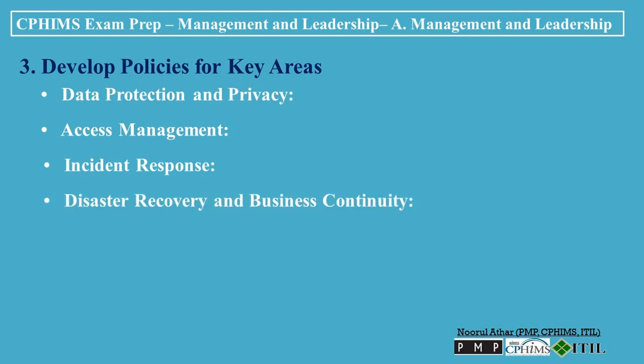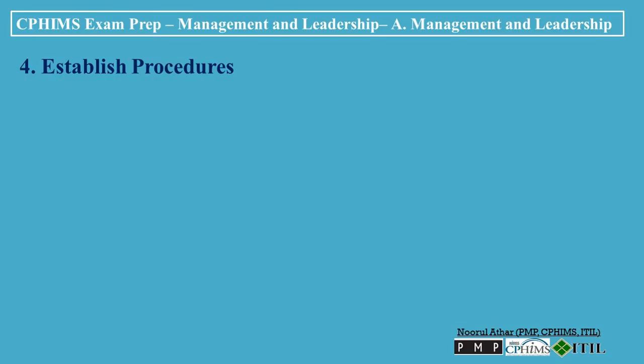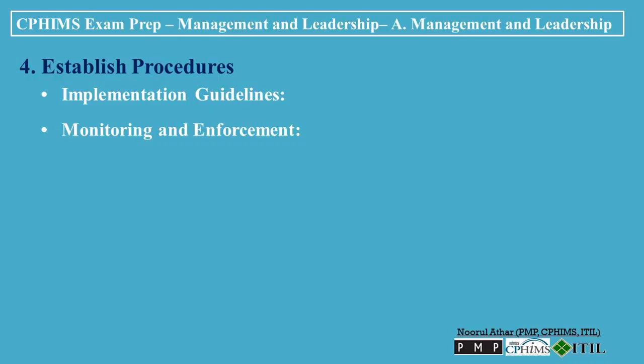Disaster recovery and business continuity: establish policies for data backup, disaster recovery planning, and business continuity to ensure the organization can continue operations in the event of a disaster or system failure. 4. Establish procedures. Implementation guidelines: develop detailed procedures that describe how policies will be implemented, including specific steps, responsibilities, and timelines. Monitoring and enforcement: define procedures for monitoring compliance with policies and for enforcing policy requirements, including potential sanctions for violations. Review and update: establish a procedure for regularly reviewing and updating policies and procedures to adapt to changes in technology, regulatory requirements, and organizational goals.